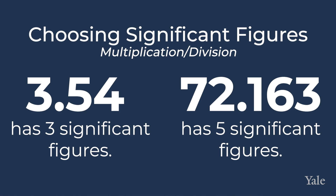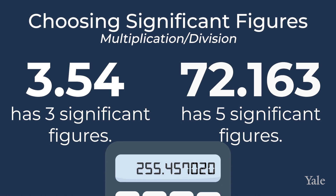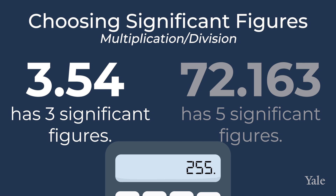We look at the number of significant figures of the numbers we multiplied. 3.54 has three significant figures, while 72.163 has five significant figures. Our final answer needs the number of significant figures in our least precise measurement, so the answer is 255, which has three significant figures.